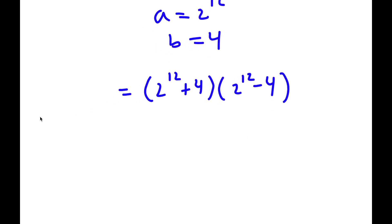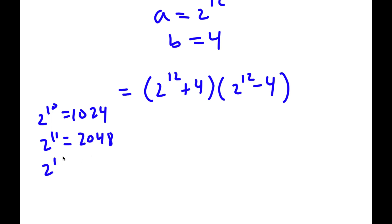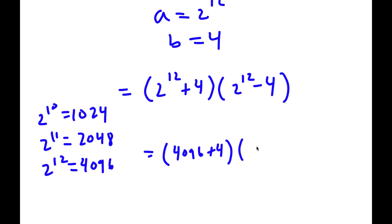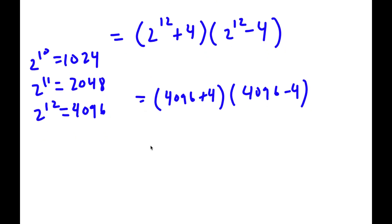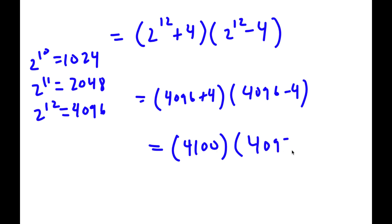Now, 2 to the power of 10 equals 1,024. So 2 to the power of 11 is double that, which is 2,048. And 2 to the power of 12 is double of 2,048, which is 4,096. So now I have 4,096 plus 4 times 4,096 minus 4, which equals 4,100 times 4,092.